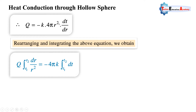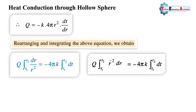So r² is in the denominator of Q. We have (1/r²)dr on the left side; 4πk is a constant term kept outside the integration. The limits for radius are r1 to r2 and for temperature are T1 to T2. As we know, 1/r² = r^(−2), so we further simplify this equation using the power rule of integration.